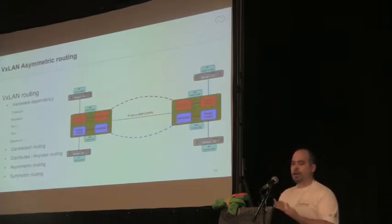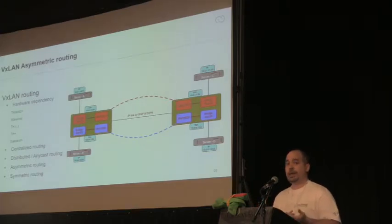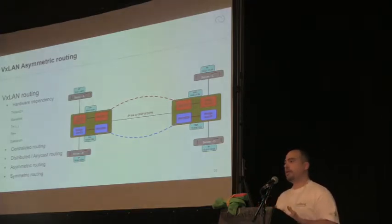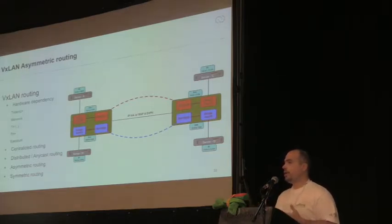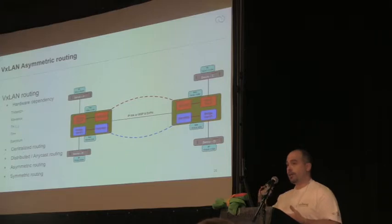Another solution is anycast routing. Since you have control over the MAC and IP updates in EVPN, you can configure the same SVI IP address — the same gateway — on every local host, which means you can route locally and east-west traffic doesn't even pass through your spines or leaf layers.